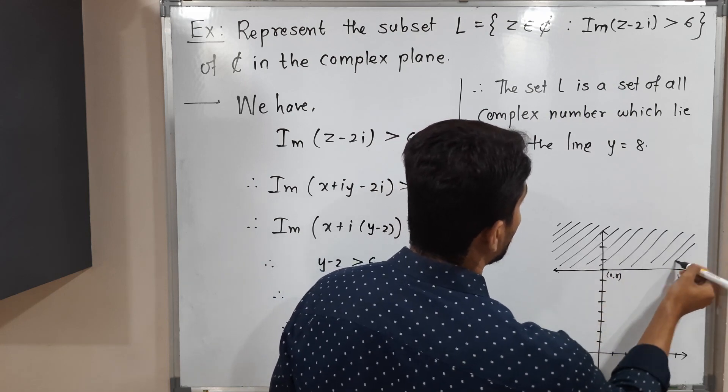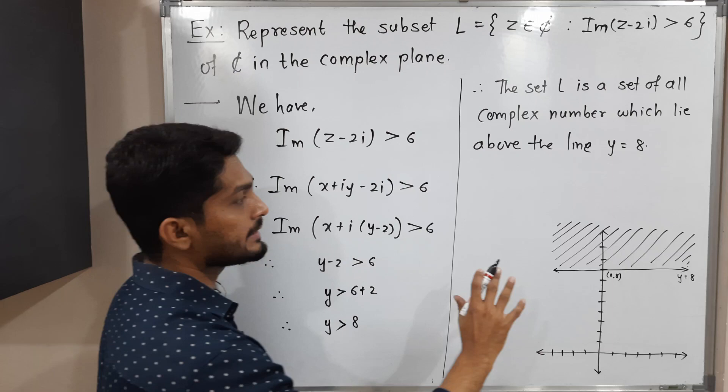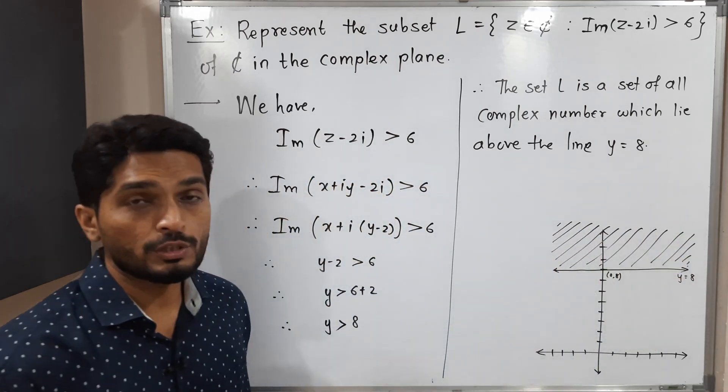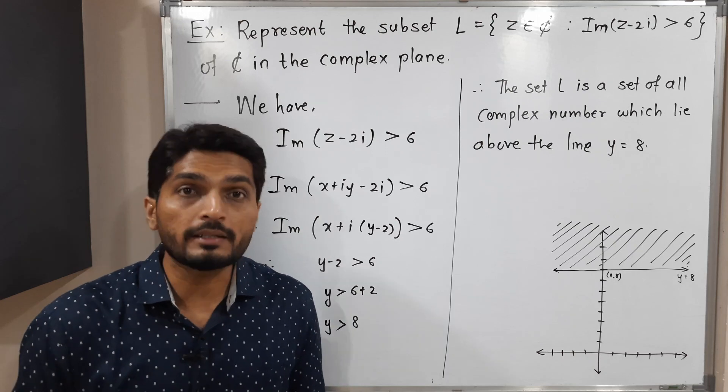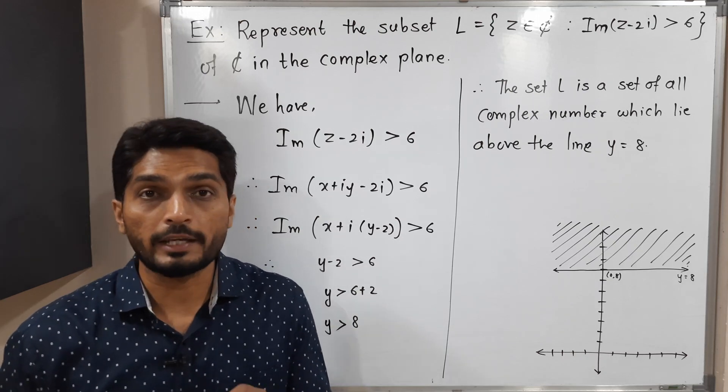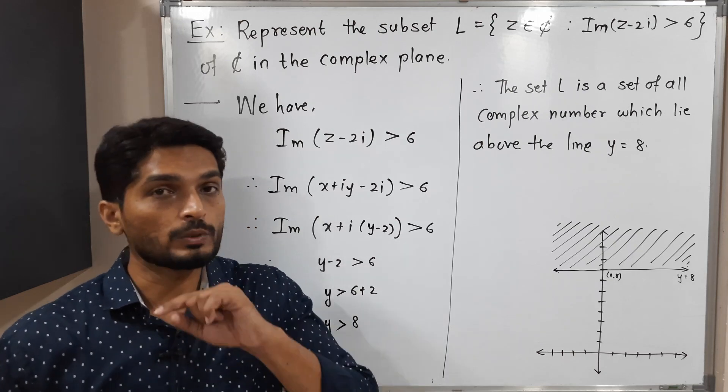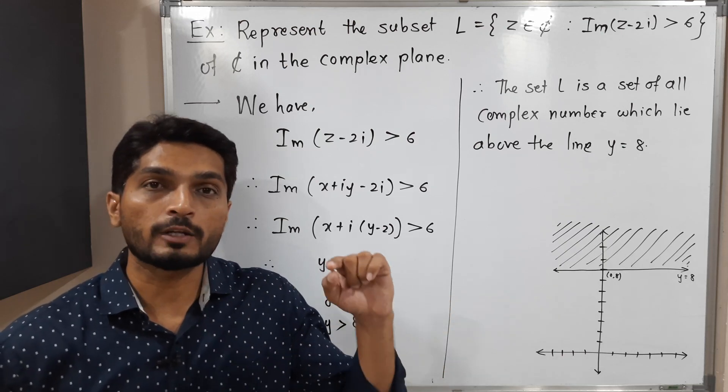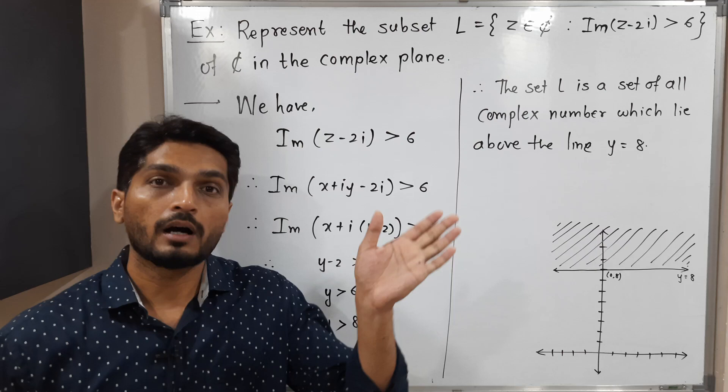That means given set L is a set of all complex numbers which lie above this line. Here they have mentioned strictly greater than y equals 8, that means we cannot consider points which lie on that line. We have to consider only those points which lie above the line.